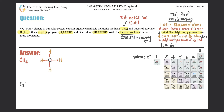Now let's do ethylene, which is C₂H₄. Hydrogen can't be in the middle, so it's going to be two carbons surrounded by four hydrogens. With organic molecules, try to make the structure as symmetrical as possible. I'll put my two carbons next to each other and, since I have four hydrogens total, I'll put two hydrogens on one side and two hydrogens on the other side of the carbons.